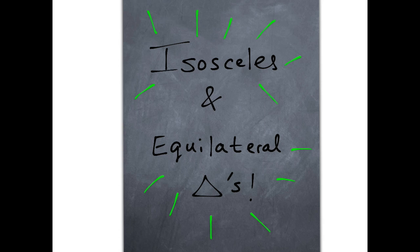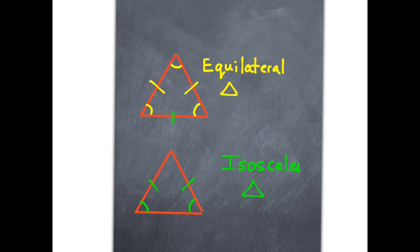Isosceles and equilateral triangles can be confusing. However, one has all angles and sides that are congruent.